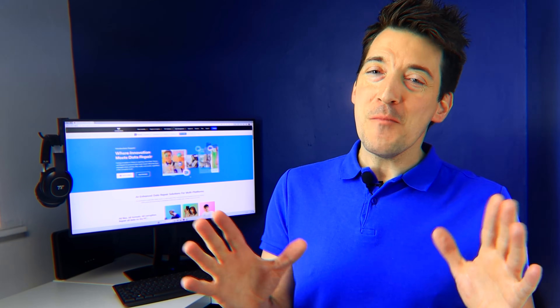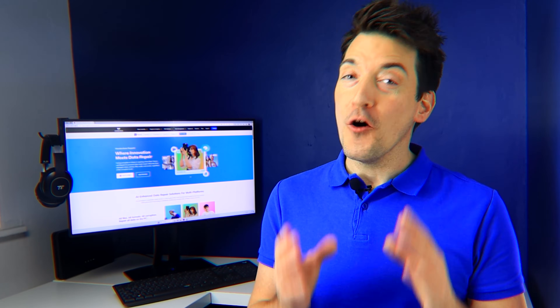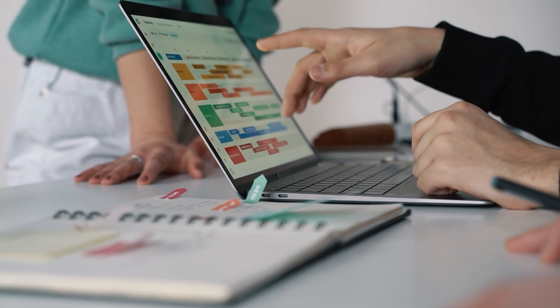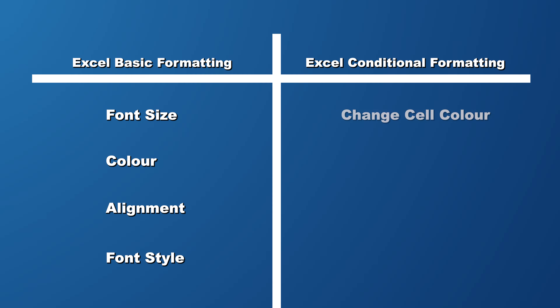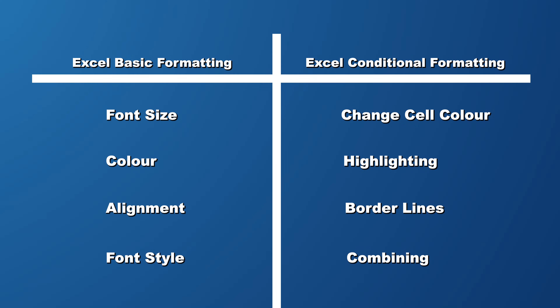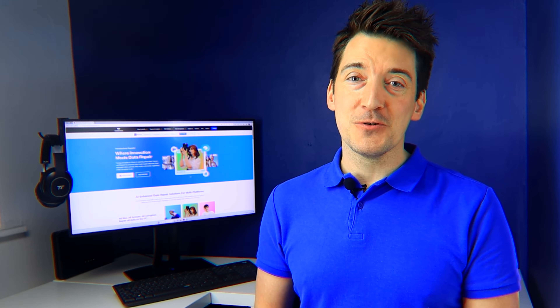In the simplest of terms, formatting in Excel refers to changing the appearance of your data to make it more readable and visually appealing — think of it like giving your data a makeover. But it's not just about making it look good; it's also about making it understandable and meaningful. Formatting can range from basic adjustments like changing font size or colour, to more complex ones like applying conditional formatting, which makes cells change colour automatically based on the data they contain.